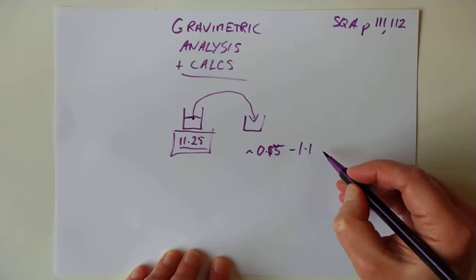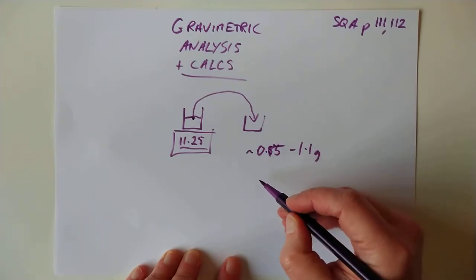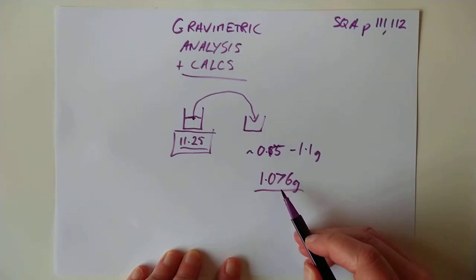up to 1.1-ish grams. But whatever you end up weighing, you have to know precisely what it is. So therefore, say, 1.076 grams would be approximately exactly 1 gram.